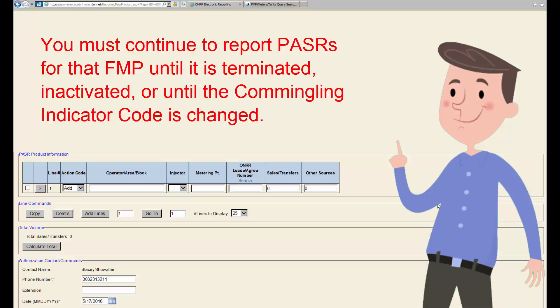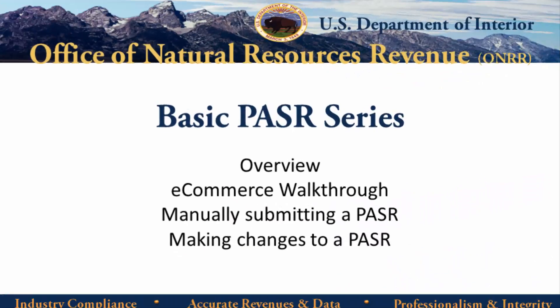You must continue to report PASRs for that FMP until it is terminated, inactivated, or until the commingling indicator code is changed. This concludes the walkthrough of the PASR.